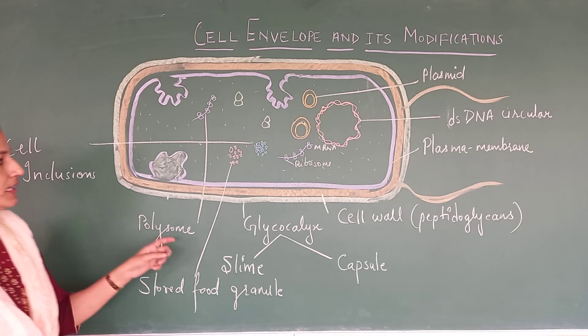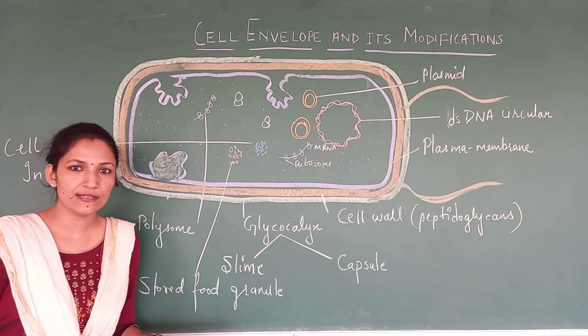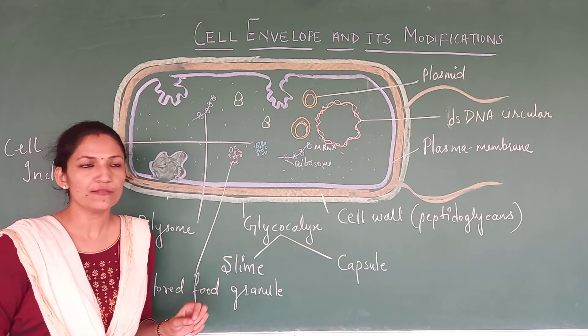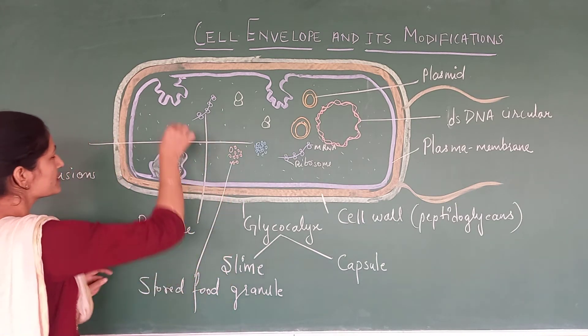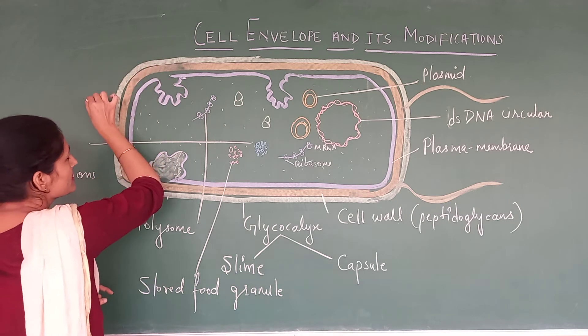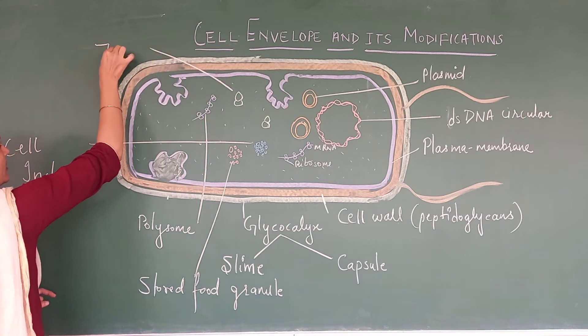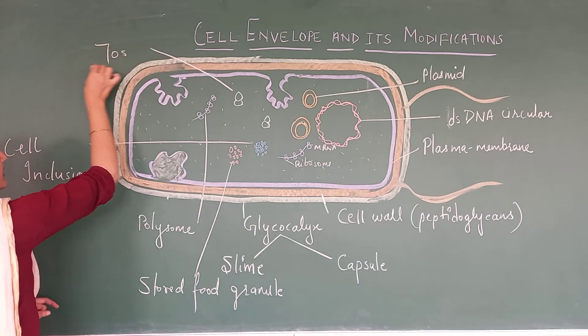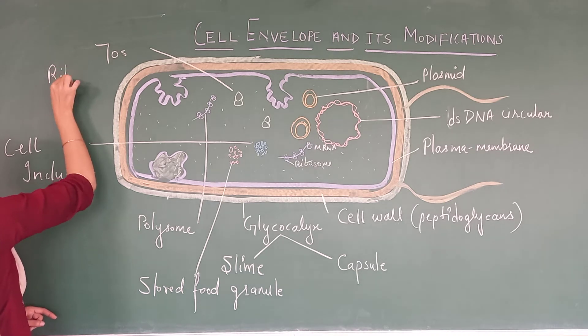In the case of prokaryotic cells, the type of ribosome which is present is 70S. So 70S ribosomes are present in prokaryotic cells.